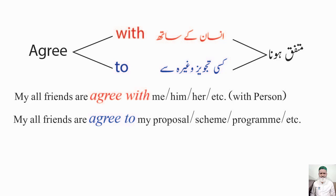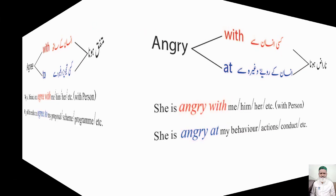آئیے شروع کرتے ہیں: agree — agree کے ساتھ 'with' بھی لگتا ہے اور 'to' بھی۔ جب کسی انسان سے agree ہوں تو 'agree with' آئے گا، اور اگر کسی تجویز سے متفق ہوں تو 'agree to' آئے گا۔ مثال: My all friends are agree with me / with him / with her. اور: My all friends are agree to my proposal / my scheme / my program.